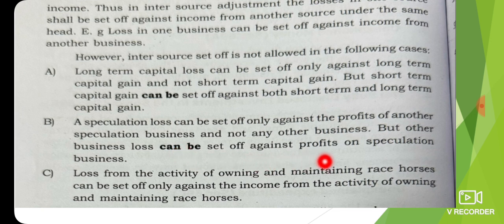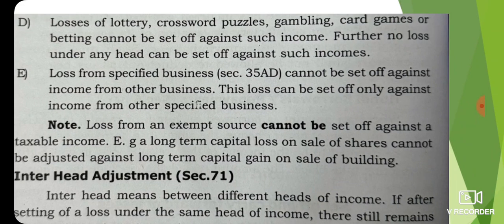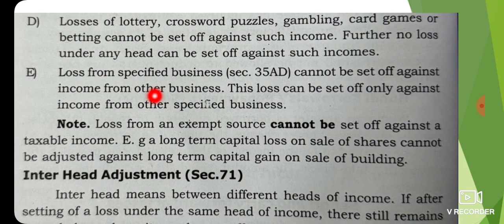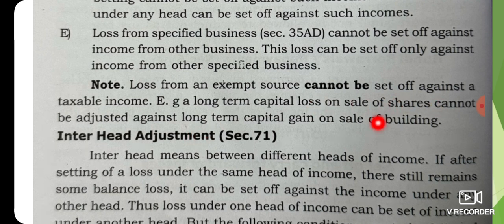Loss from the activity of owning and maintaining race horses can be set off only against income from the activity of owning and maintaining race horses. This loss can be set off only against income from other specified business, such as cold chain or warehousing facilities.